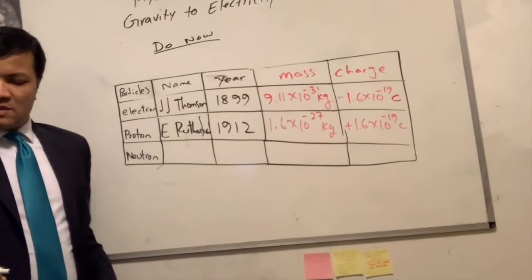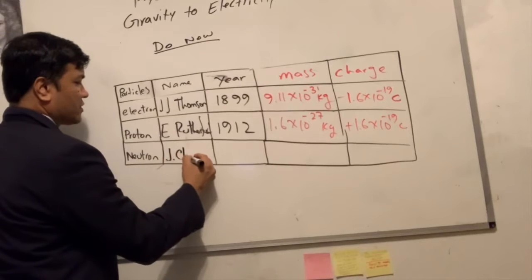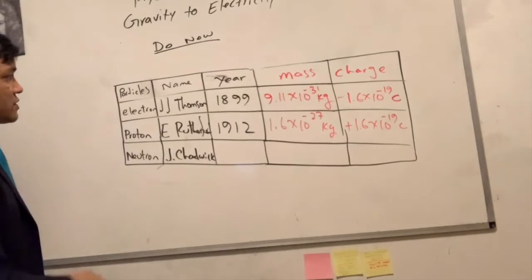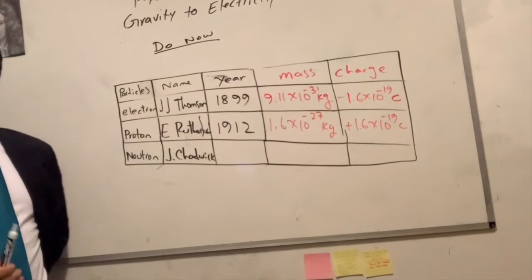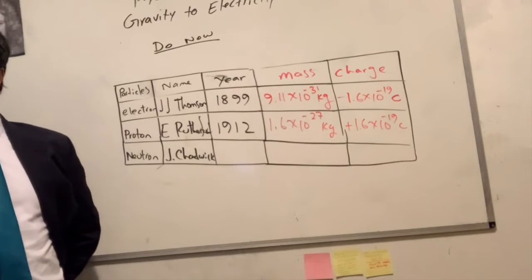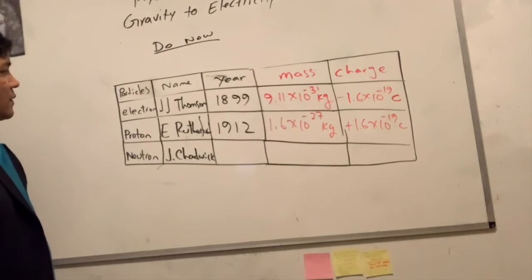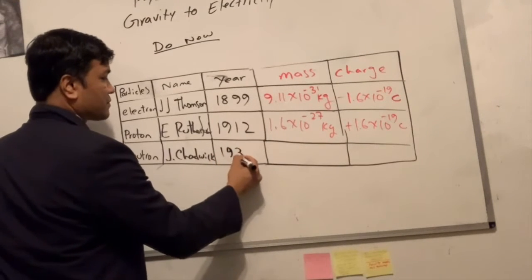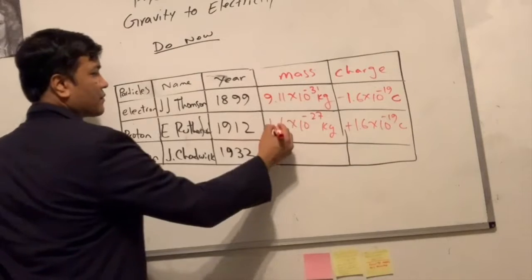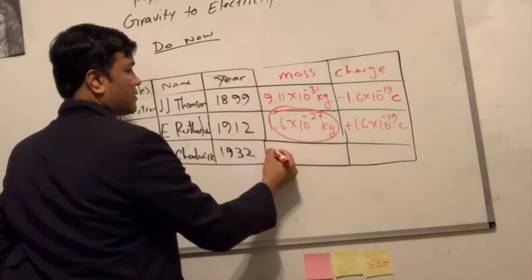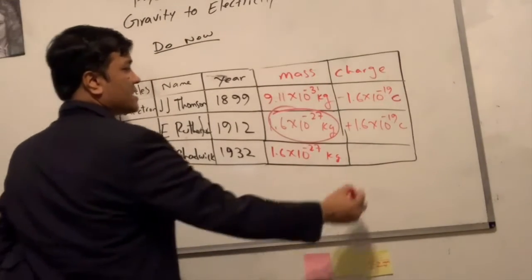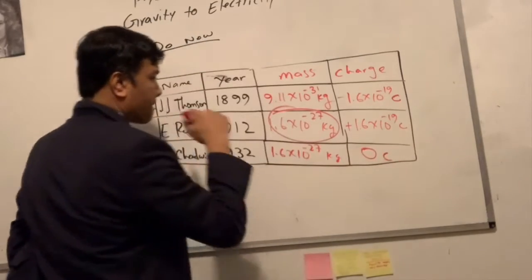Now the neutron. Who discovered the neutron? James Chadwick. In 1960? He was also English — born in England. So you see the contribution to science by English people. 1935? 1932. The mass — what is the mass of the neutron? 1.67 times 10 to the minus 27. What is the charge? Zero. Zero.